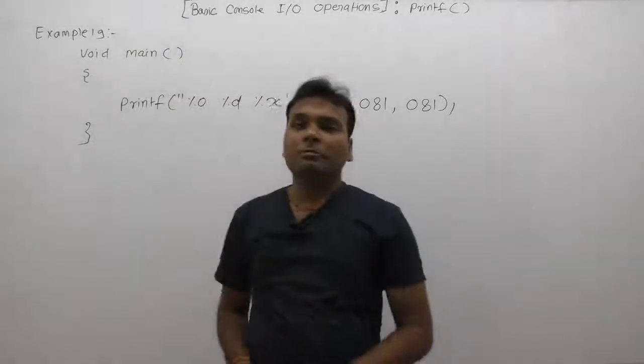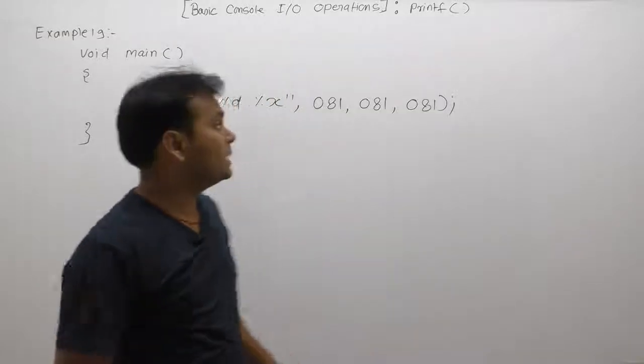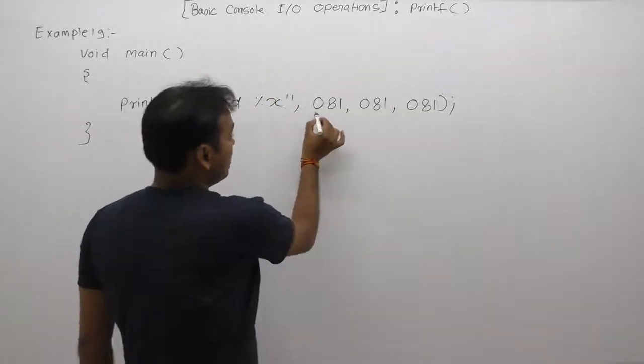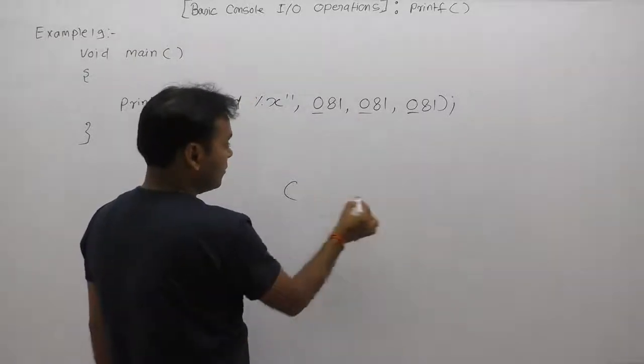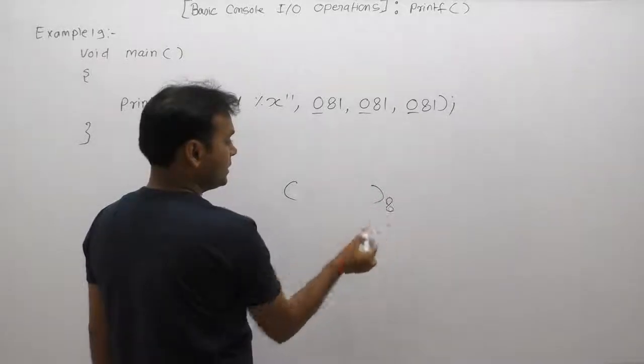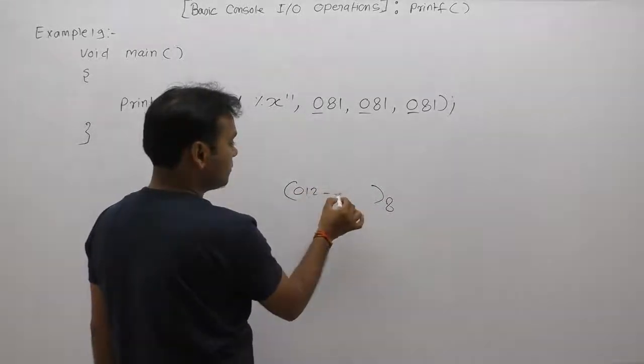Our next example: print tab. Here we are supplying base values in octal format because the number starts with zero. As we've seen for octal numbers, the basic value digits are 0, 1, 2, 3, 4, 5, up to 7.